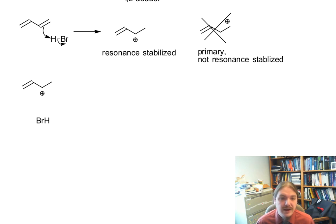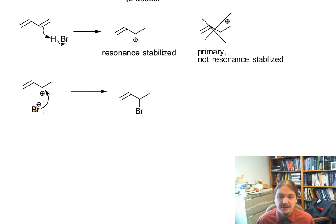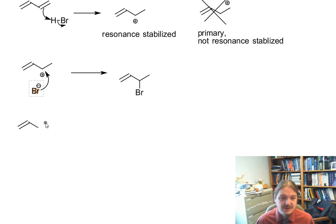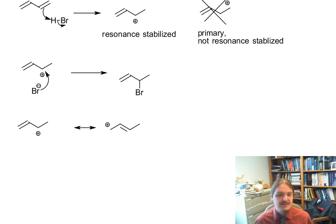It seems pretty straightforward from this carbocation that we get nucleophilic attack at that carbocation, and that leads to the production of the first product — probably the more intuitive product. But this allyl carbocation is resonance stabilized, which means there is a resonance contributor — another resonance contributor where the cation is on a different carbon of the allyl system.